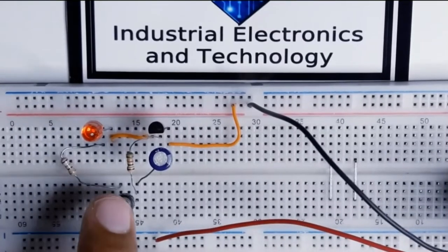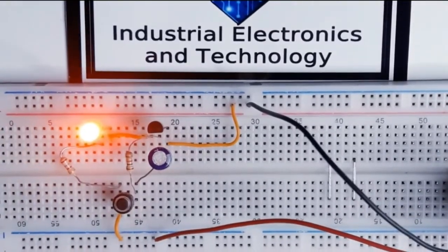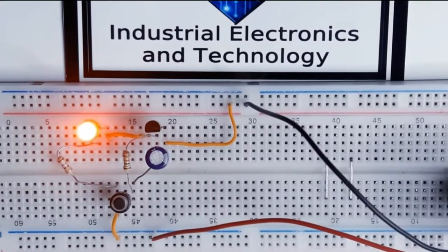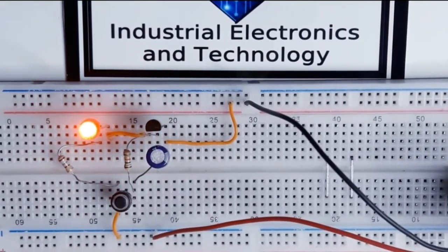Hello everyone, today we will learn how to make a simple 10 seconds delay circuit using BC547 transistor. So let's go for the components.